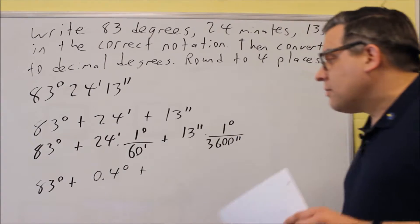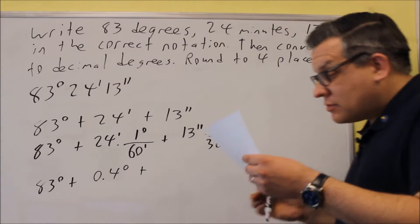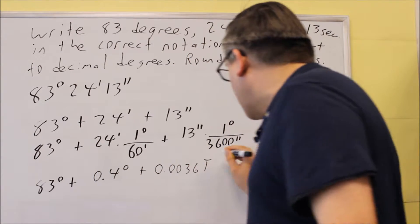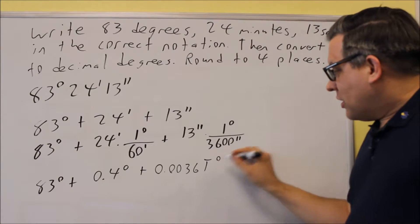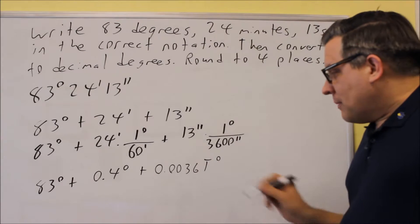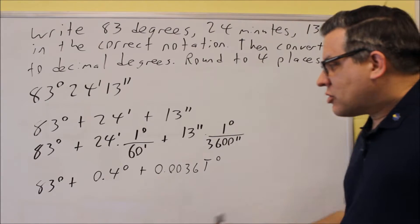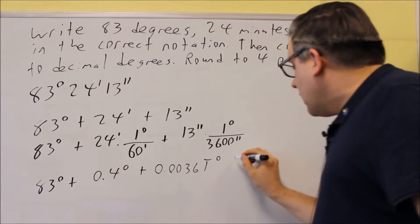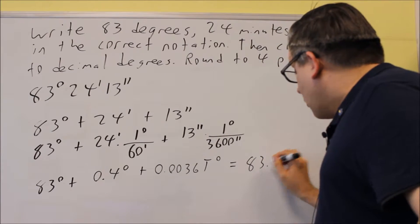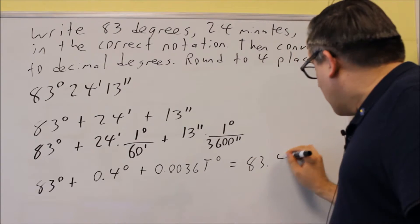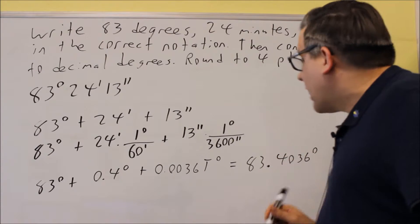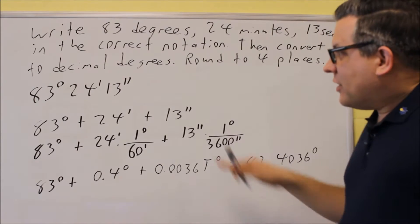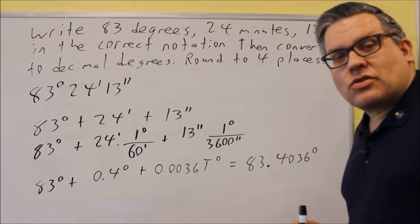For 13 seconds, we use the conversion 1 degree equals 3,600 seconds, putting seconds on the bottom to cancel. So we do 13 divided by 3,600, which gives 0.0036 degrees (the 1 is repeating). Rounding to four decimal places and adding everything together: 83 plus 0.4 plus 0.0036 equals 83.4036 degrees — that's the equivalent decimal degrees.